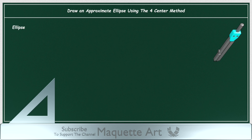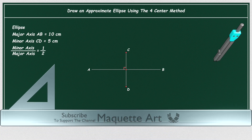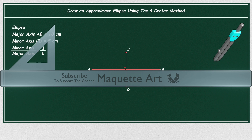Now let's draw an ellipse with a major axis AB equal to 10 cm and a minor axis CD equal to 5 cm, so the ratio between those two axes is 1 over 2. The first step is to draw the major axis of length 10 cm. Then in the middle of the major axis, draw the minor axis of length 5 cm, perpendicular to the major axis. You can use the T-square and triangle to draw both axes.